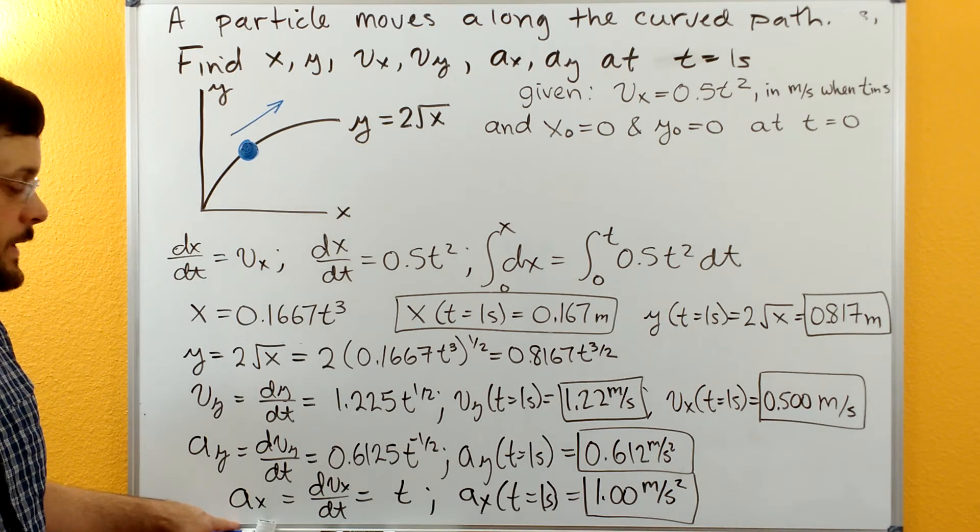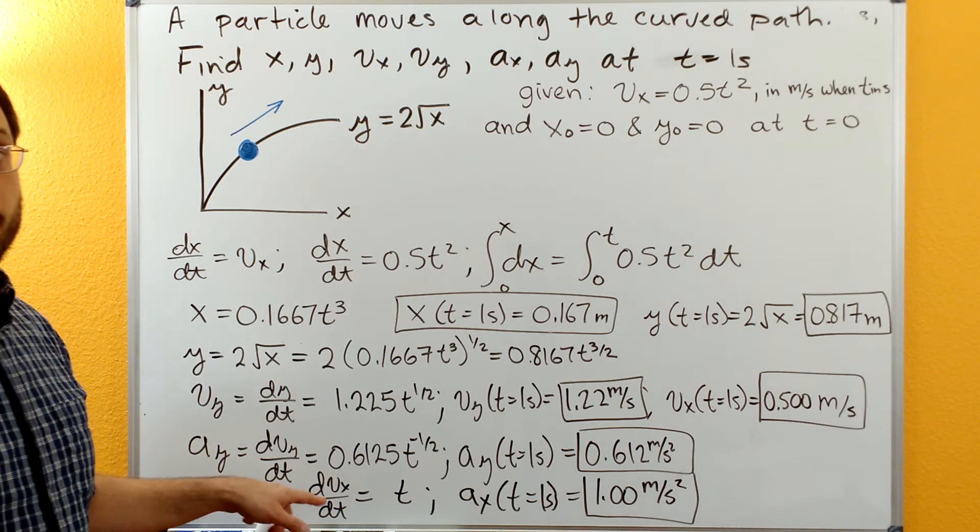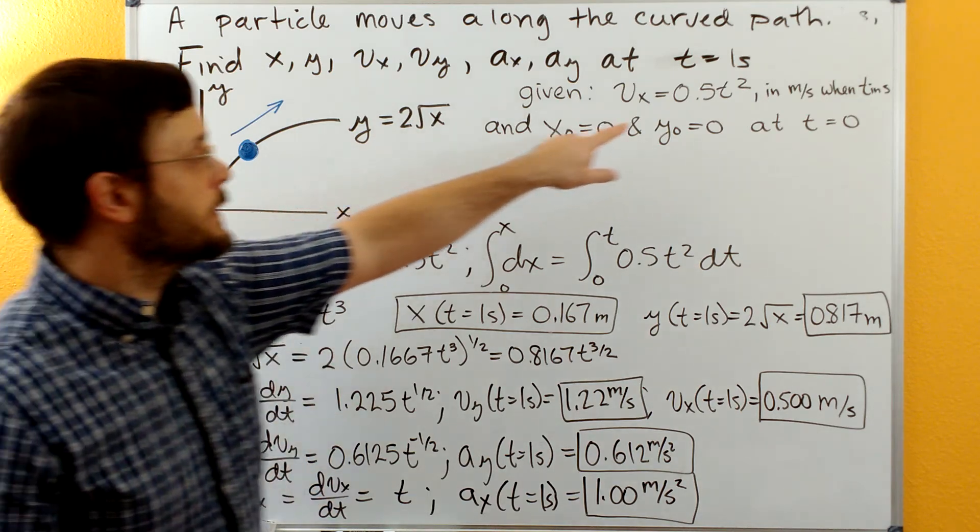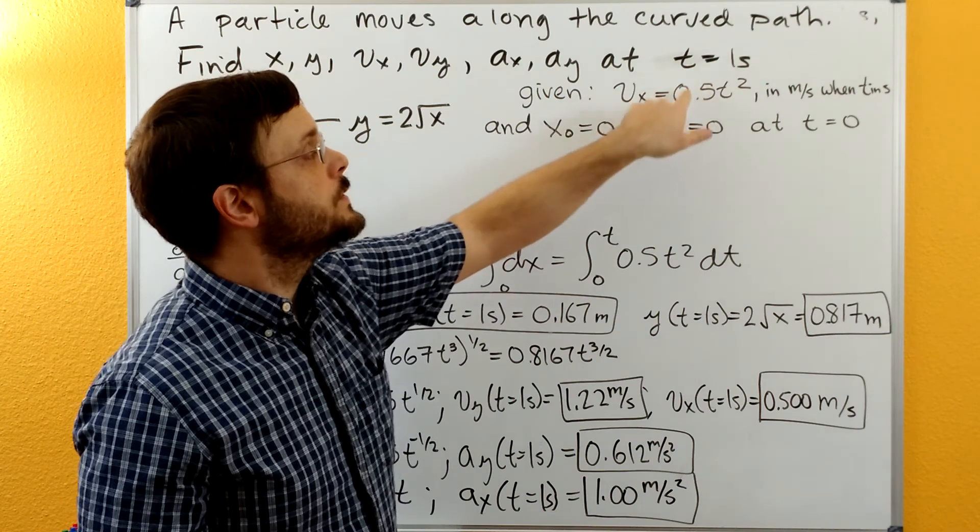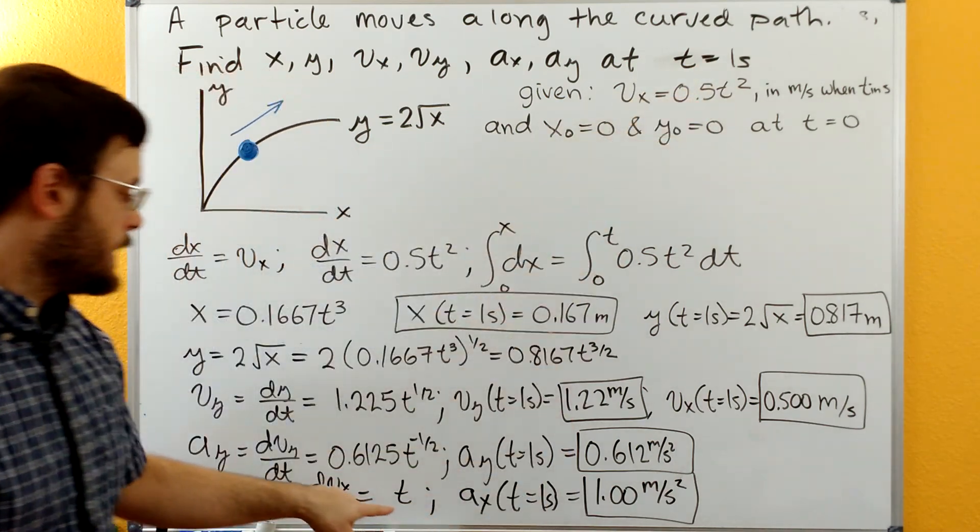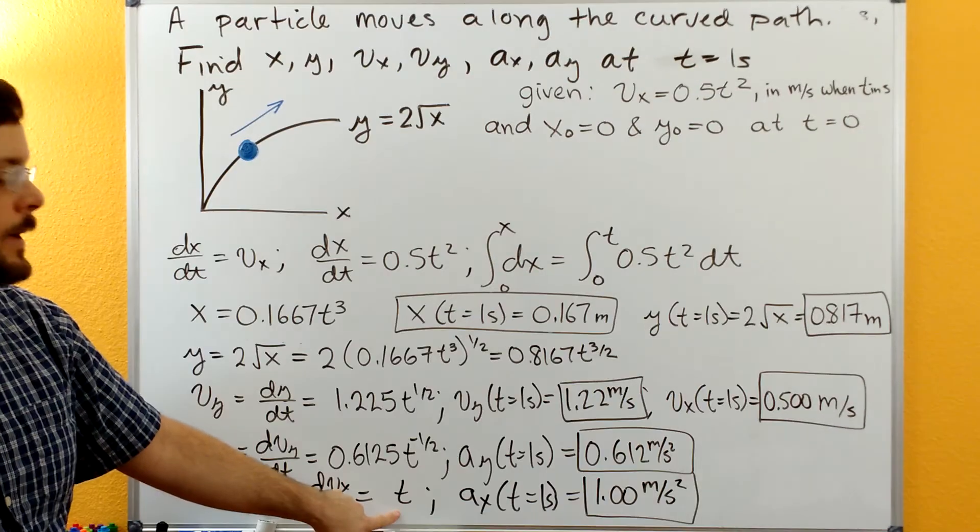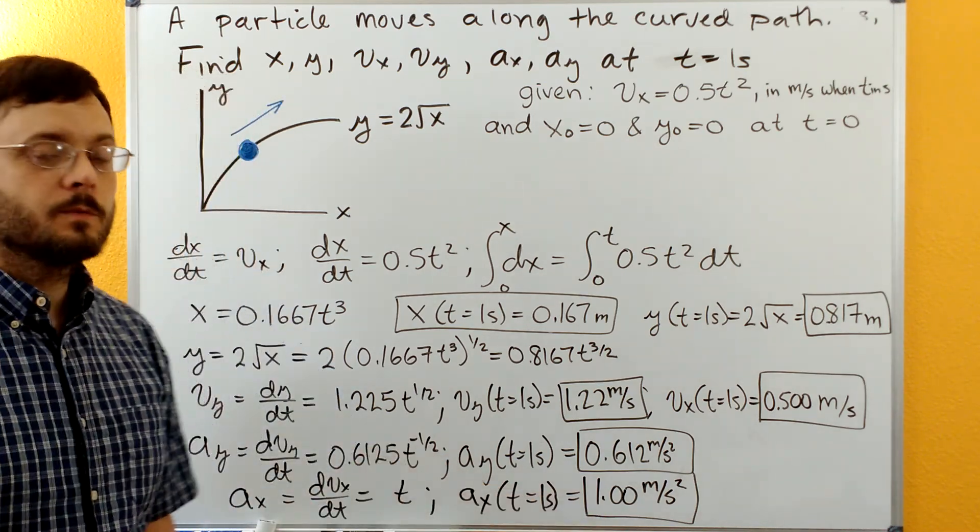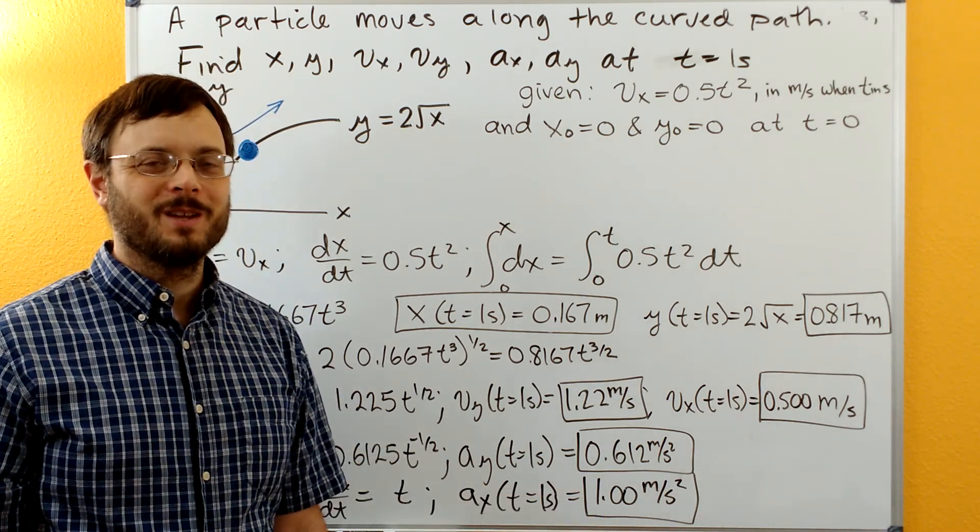And then for acceleration in x, it's just going to be the time derivative of our velocity in the x. Going back up to here, so it's going to be 2 times 0.5 times t raised to the first power. Plug in t equals one second, and we get ax is 1 meter per second squared. Thanks for watching.